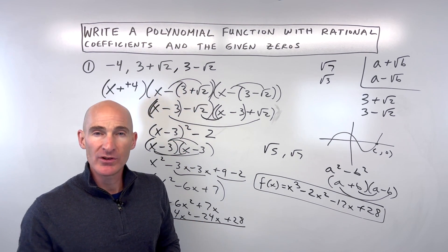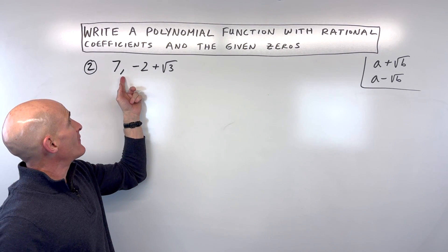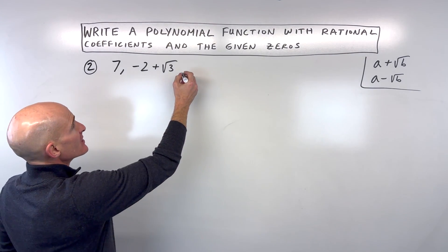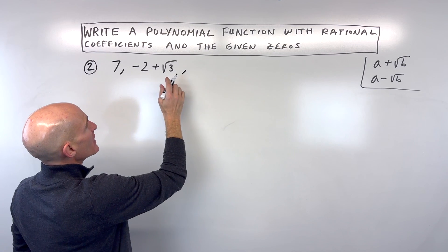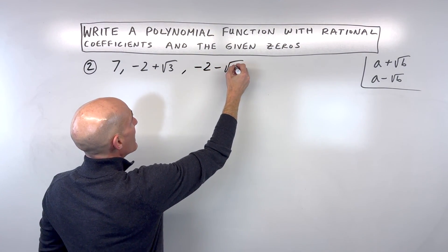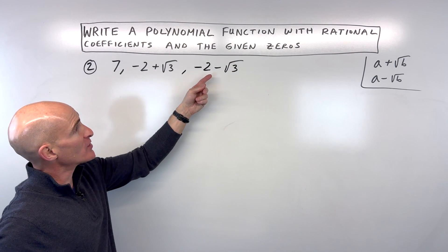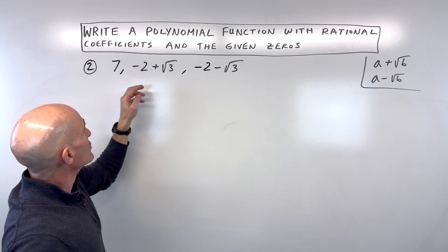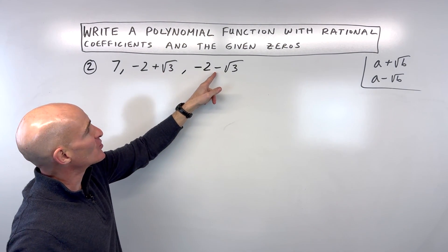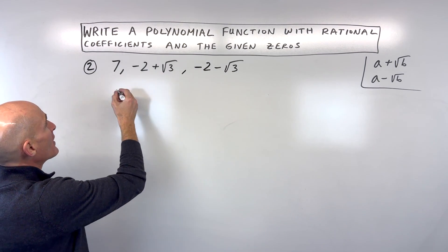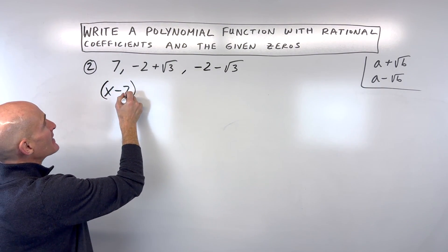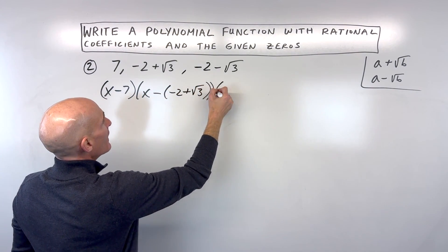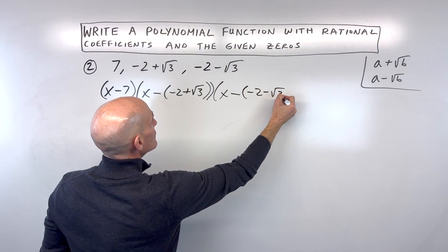Let's take a look at another example — you can pause the video and try this one on your own. Our zeros are seven and negative two plus root three. If negative two plus root three is a zero, then negative two minus square root of three would also be a zero — that's the conjugate pair. We're just changing the sign in between the two terms. Then our factors are x minus the quantity negative two plus root three, and x minus the quantity negative two minus root three.